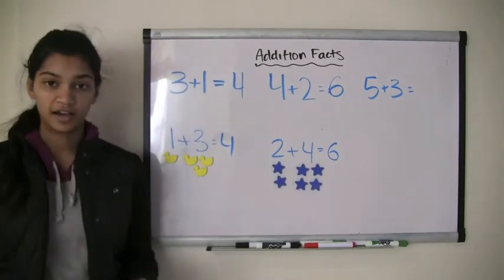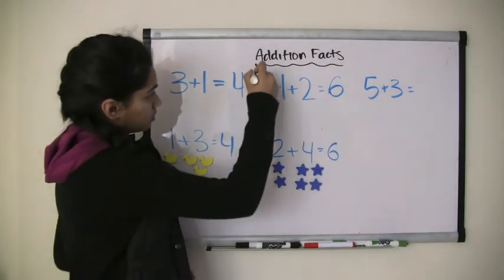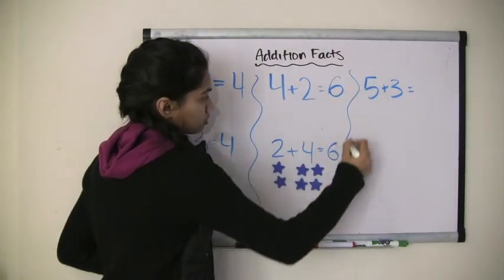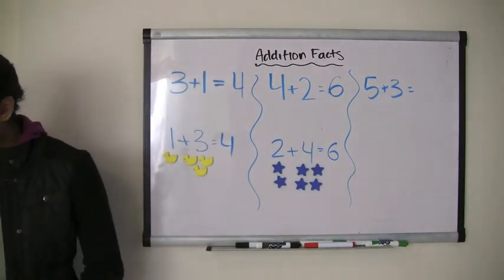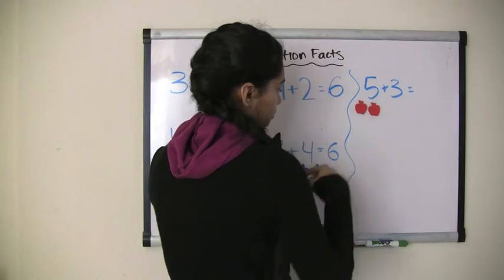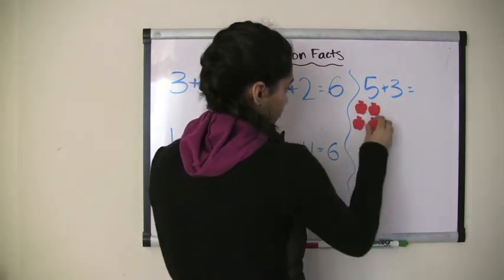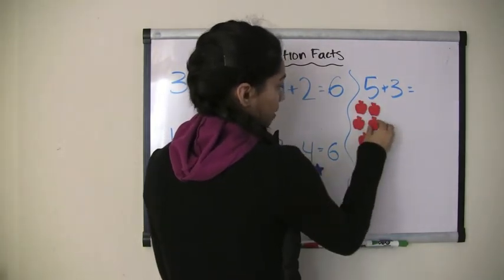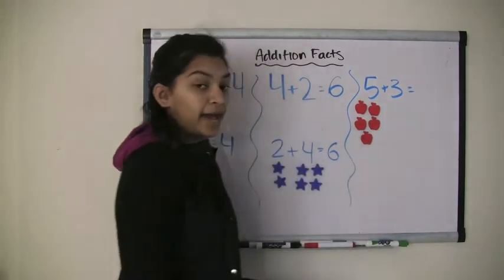Let's say we had 5 plus 3. So we have 1, 2, 3, 4, 5 apples to start out with. And I add 3 more.